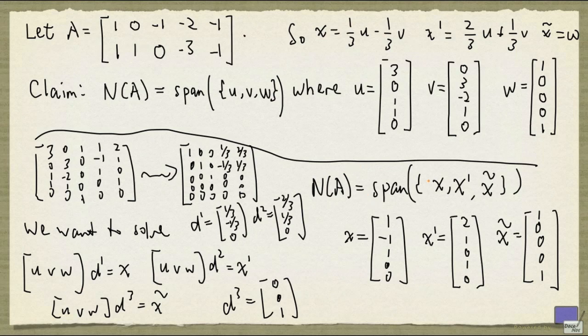And notice that both sets, u, v, w and x, x prime, x tilde, describe N(A), have the property that none of it can be expressed as the other two, and they have the same number of elements. So is there something deeper going on here? Well, this is a question that will be answered in the next few videos.